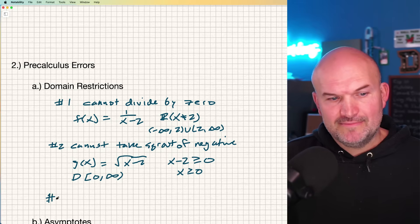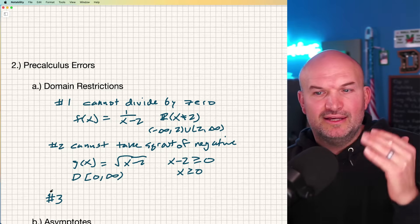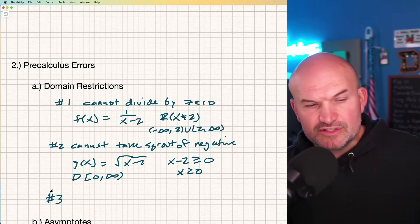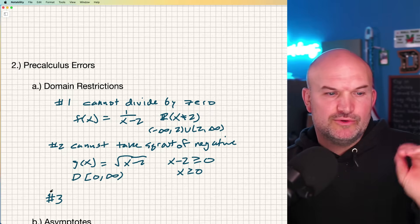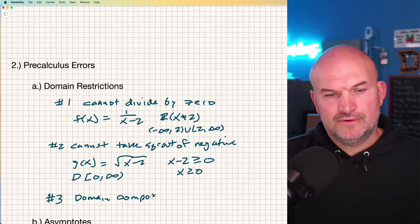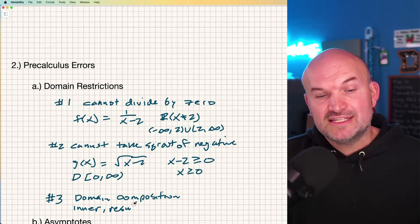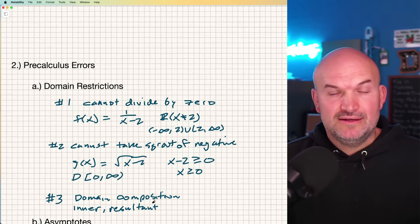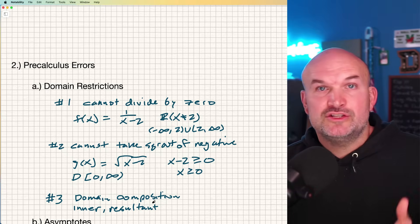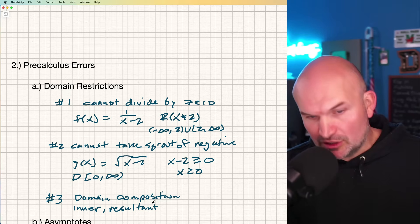The next one is composition. A lot of students understand number one and two, but once we deal with composition, things get a lot more fuzzy. When you're doing composition of functions, you need to make sure you do the domain of the inner function, that's the function you're plugging into the other function, as well as the resultant function. Once you go ahead and combine them and simplify them, make sure you find the domain of that. You've got to find the intersection of the inner domain as well as the resultant function.